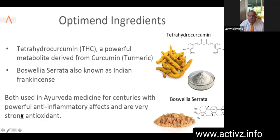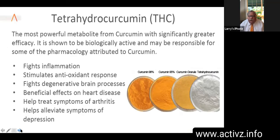The second prong is Boswellia serrata, also known as Indian frankincense. Both of these have been used in Ayurvedic medicine for literally centuries, and they're both powerful anti-inflammatory and antioxidant herbs. Tetrahydrocurcumin fights inflammation, stimulates the antioxidant response by upregulating antioxidant genes, fights degenerative brain processes, is beneficial for heart disease, treats symptoms of arthritis, and also helps alleviate symptoms of depression.